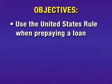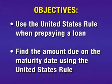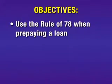We will use the United States Rule when prepaying a loan. We will find the amount due on the maturity date using the United States Rule, and we will use the Rule of 78 when prepaying a loan.